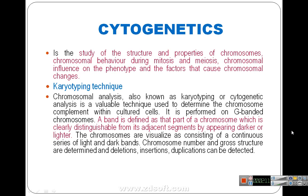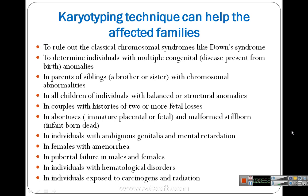Chromosomes are visualized as consisting of a continuous series of light and dark bands. Dark bands have the condensed, compact DNA part of the chromosome, while light bands have relaxed DNA which is easily replicable — that is the euchromatin. Chromosome number and gross structure are determined, and deletion, insertion, and duplication can be detected after this analysis.